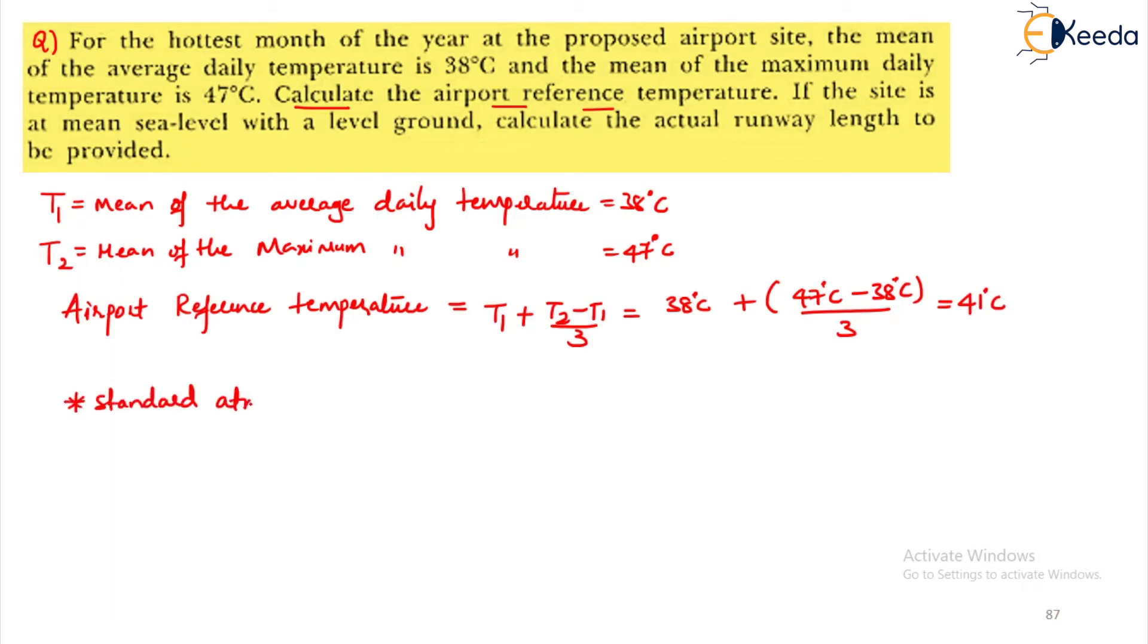Also, we know that the standard atmospheric temperature at mean sea level is equal to 15 degree centigrade. What will be the raise in temperature? This is nothing but a raise in temperature. This will be equal to 41 degree centigrade minus your 15 degree centigrade that will be 26 degree centigrade. Till here it was the first bit of the problem.